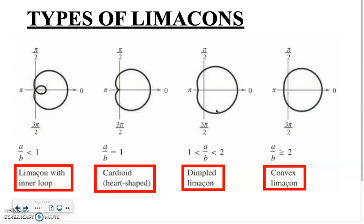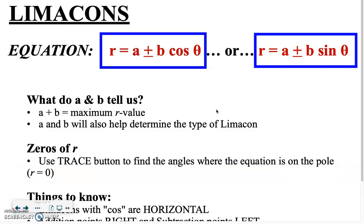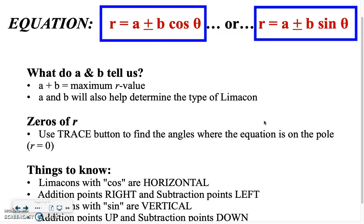All four types shown here are horizontal and pointing to the right, so when we reference vertical or pointing left, those are different orientations we'll touch on more. Understanding a and b is crucial: a is the constant out front that you're adding or subtracting; b is the coefficient in front of the trig function. If we ever had a coefficient in front of theta, it wouldn't be a limaçon — so we won't encounter that situation.